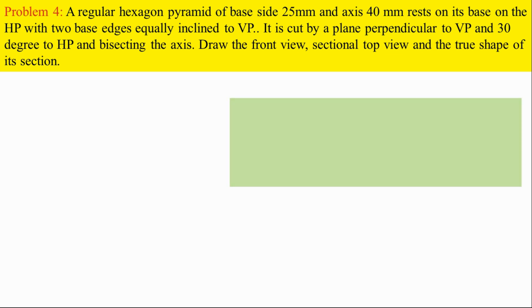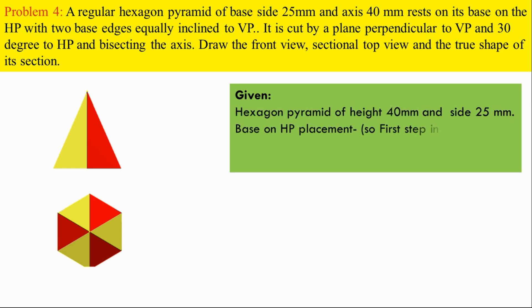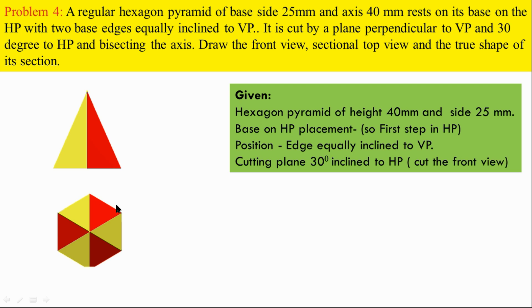Now we have been given the size of the solid. We have to look at the placement. The base is on the HP. If you look at the position, the base is equally inclined to the VP — two lines are equally inclined to the VP. If you look at the diagram, the cutting plane is perpendicular to the VP. In the front view, it will be 30 degrees to the HP.